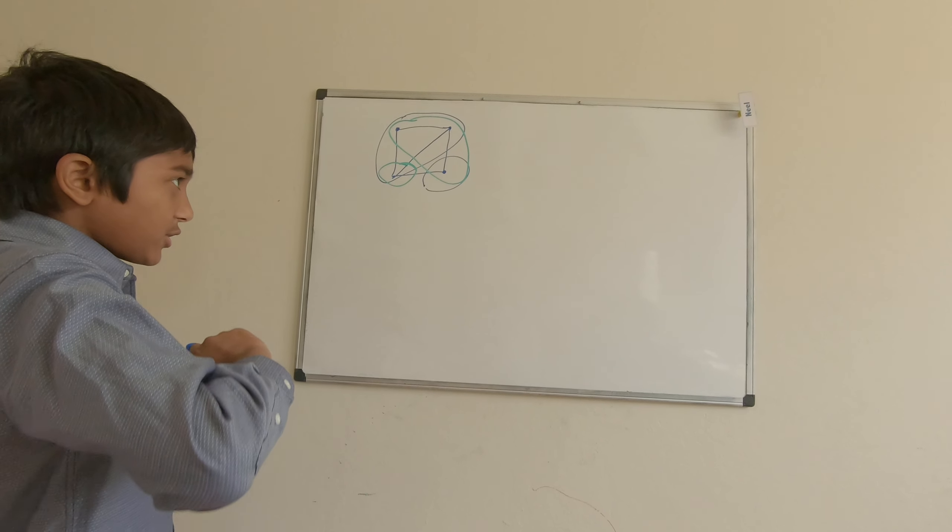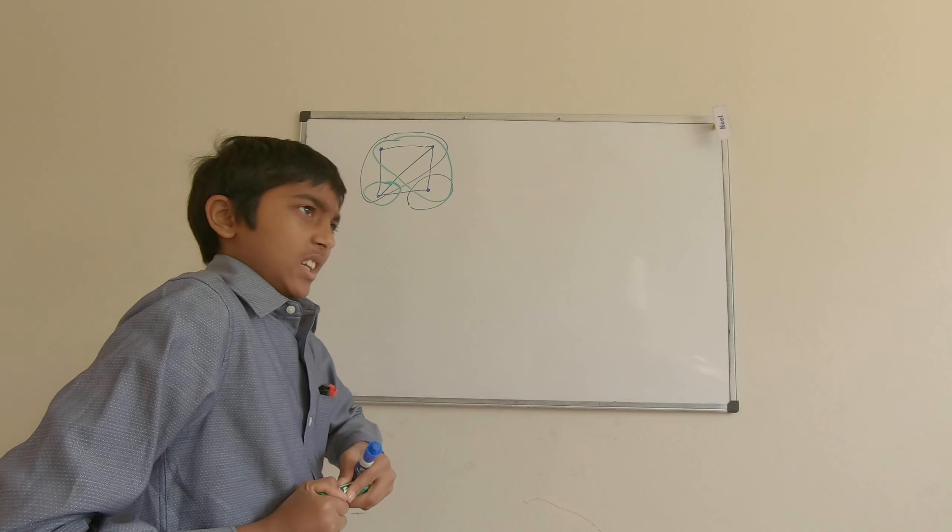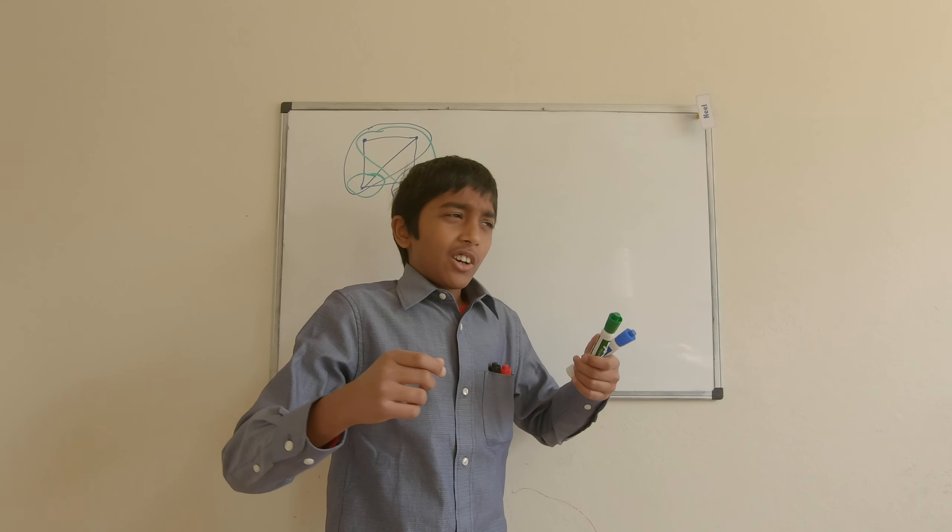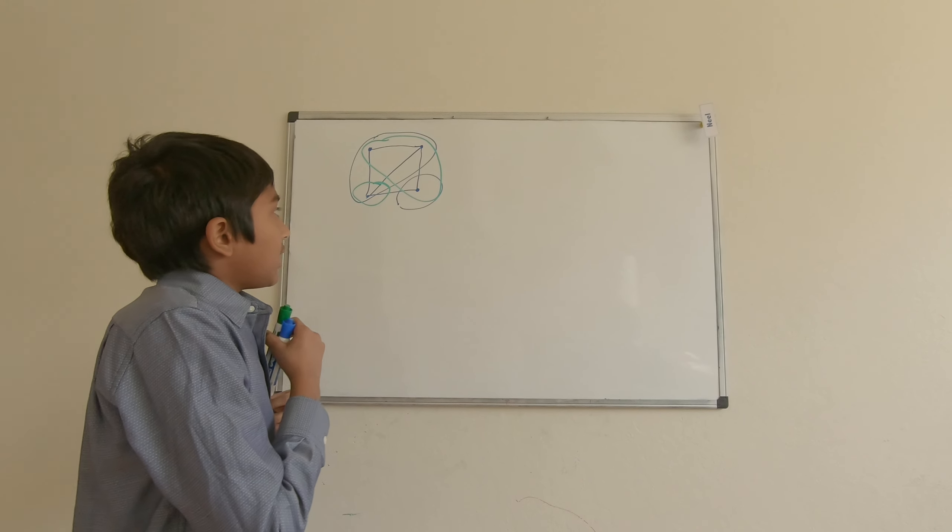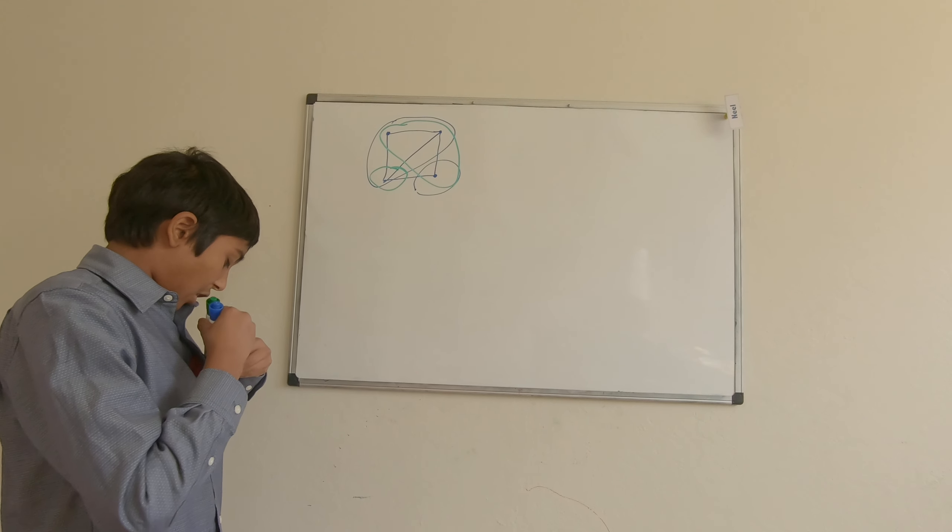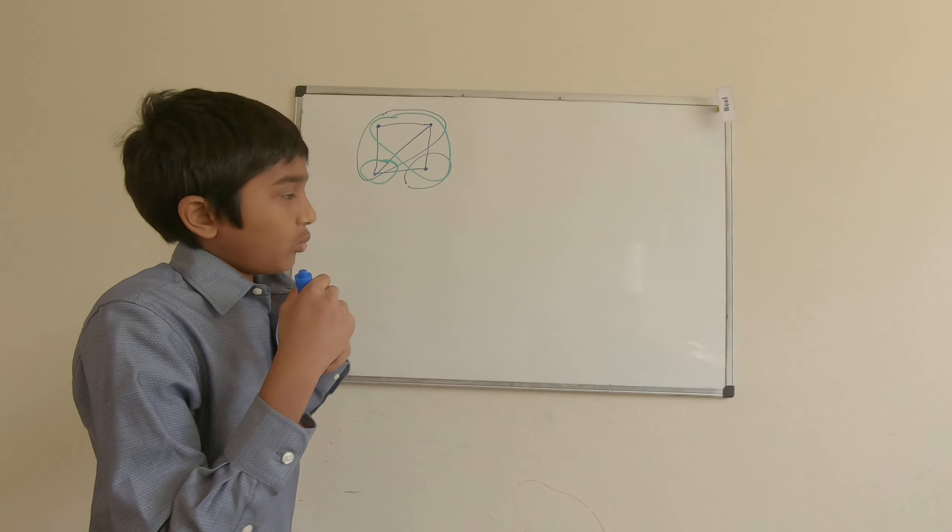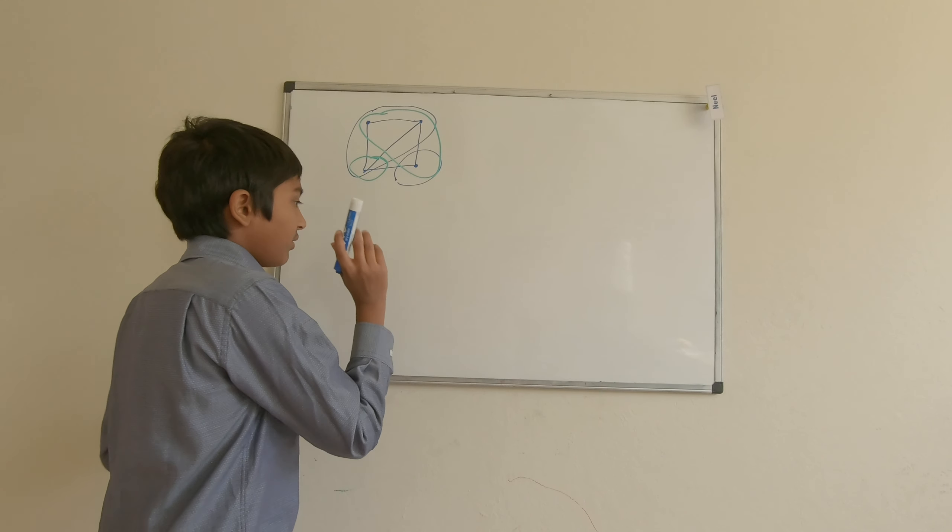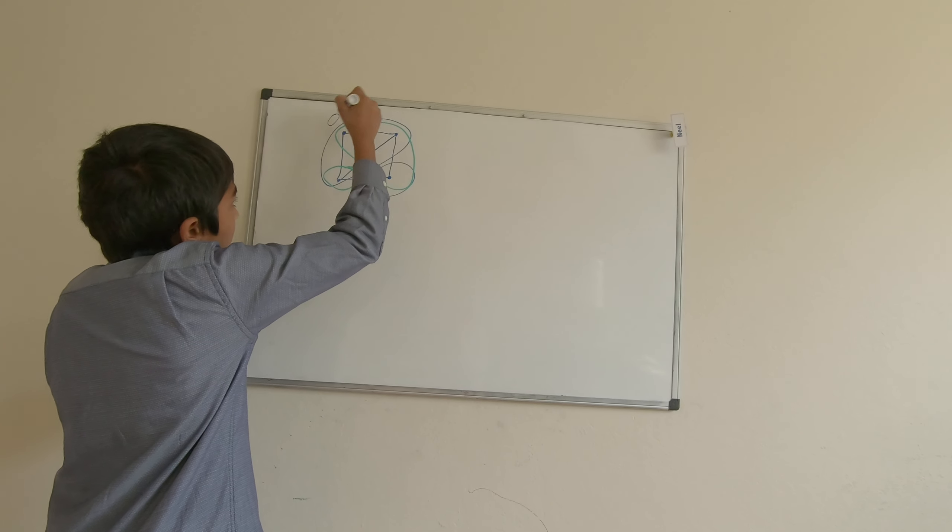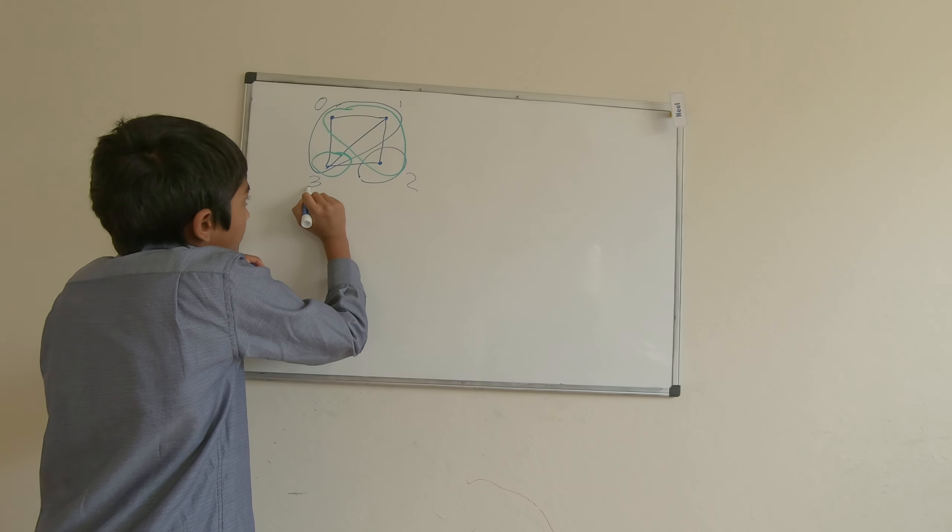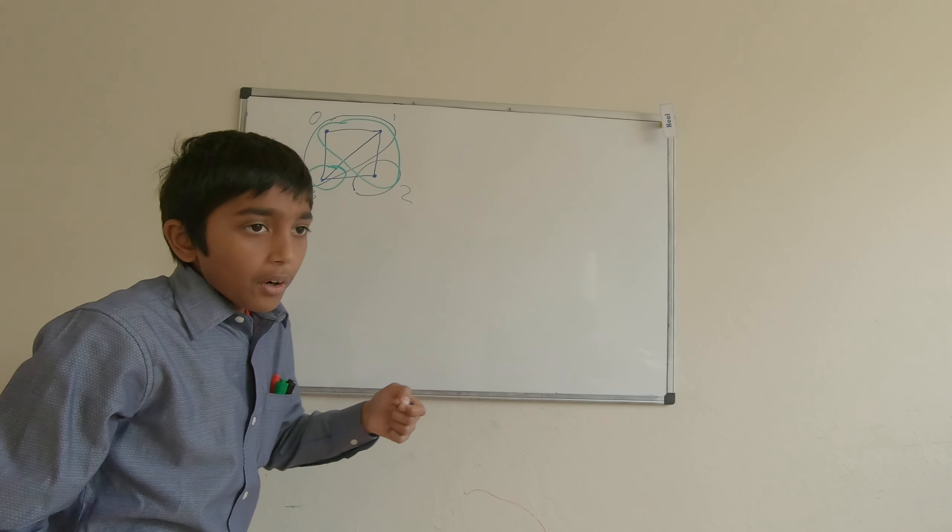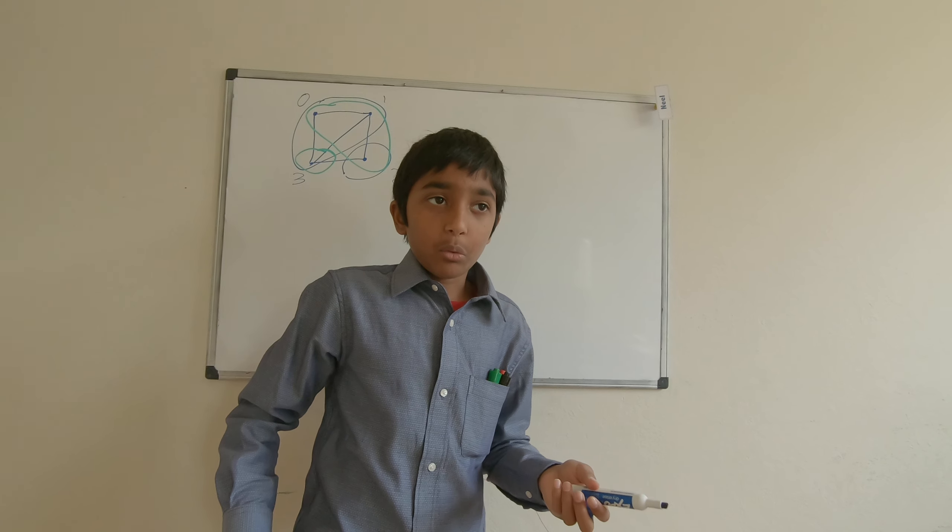So first of all, how do we implement a graph in Python? Well, think about it. What we need to know is what vertices are connecting to what other vertices. So what we can do here is we can call this one 0, 1, 2, 3.